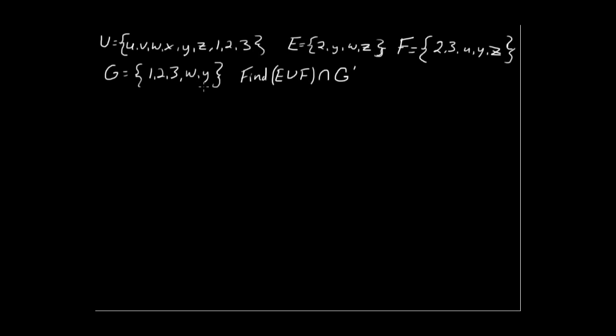Okay, here we have a universal set U which contains the elements U, V, W, X, Y, Z, 1, 2, and 3.